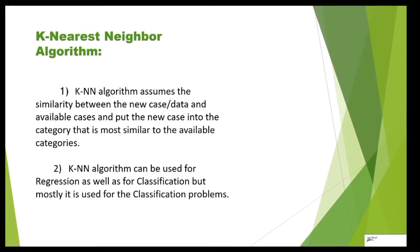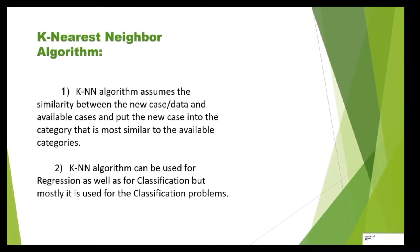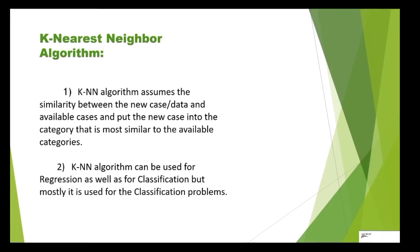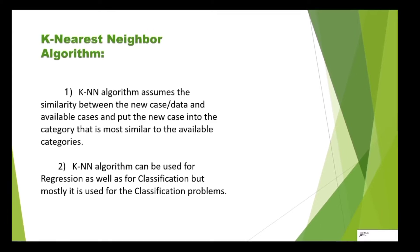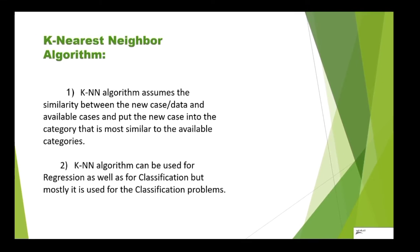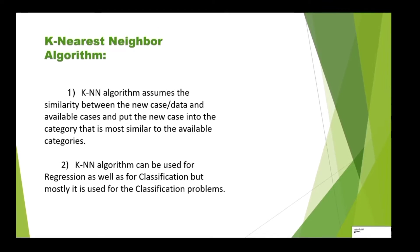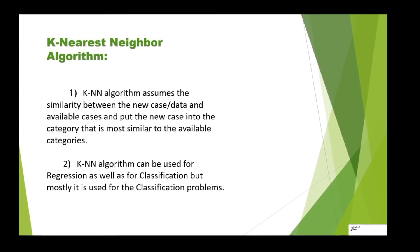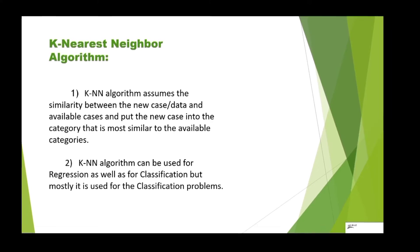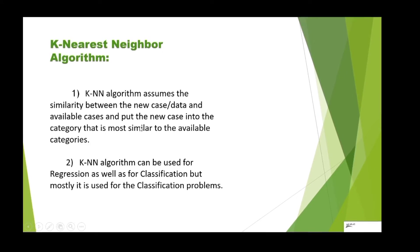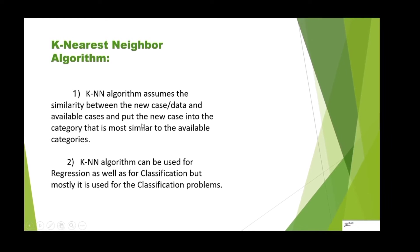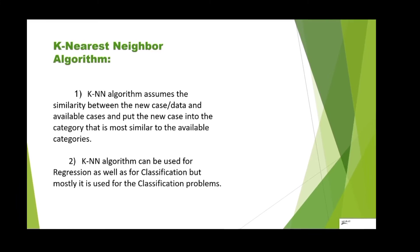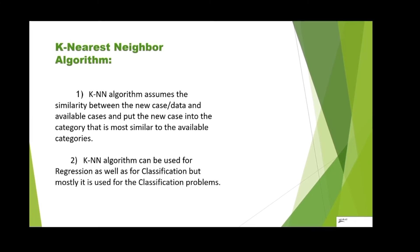Hello everyone, today we are going to know about the KNN algorithm, which is one of the classification-based algorithms. How it classifies the data is by calculating the similarity between the different data points using the Euclidean distance formula, and based on that formula it categorizes the data points into specific categories.